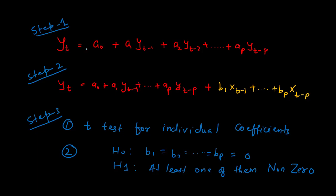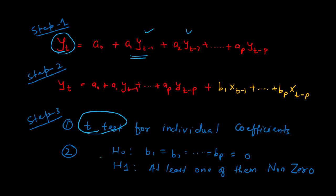There are three important steps to test Granger causality. First, build a model using only the lags of the same variable — if predicting Yt, take lags Yt minus 1, Yt minus 2, up to Yt minus p. Second, take the significant lags from step one, add the lags of Xt, re-estimate, and determine how many coefficients of the lags of Xt are significant. We do this using a t-test for individual coefficients and an F-test to test them jointly. The null hypothesis is that b1, b2, up to bp are all 0; the alternative is that at least one is non-zero. If one of them is non-zero, we can be sure that Xt Granger causes Yt.